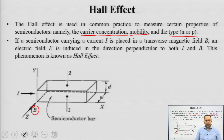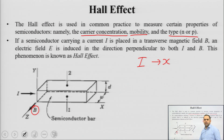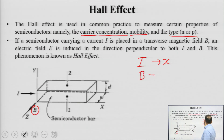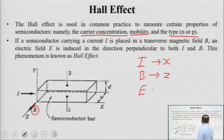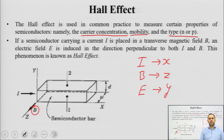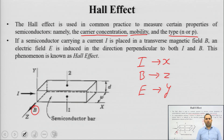When a semiconductor which is carrying a current I — the direction of current is in the x direction — is placed inside a magnetic field B in the z direction, such that both I and B are transverse to each other, an electric field E is induced in the direction perpendicular to both I and B, so an electric field will be induced in the y direction. This phenomena of electric field induction is known as Hall effect.